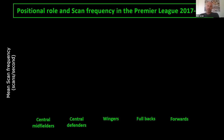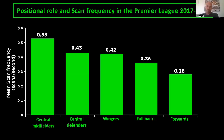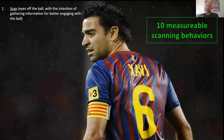An interesting finding is positional differences. The number here is average scan frequency — central midfielders have a frequency of 0.53, meaning they scan on average five times per 10 seconds before getting the ball. Midfielders and defenders are the most frequent scanners; forwards are the least frequent. This is what we find consistently across studies.